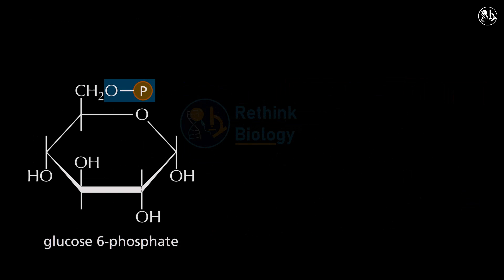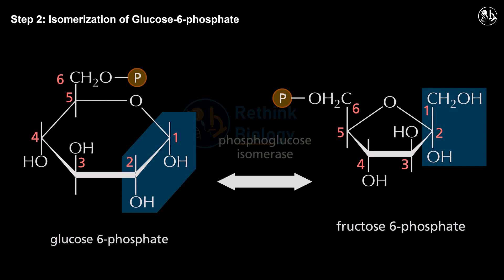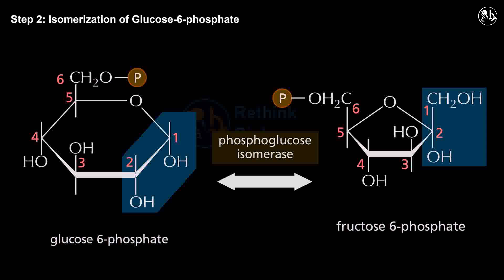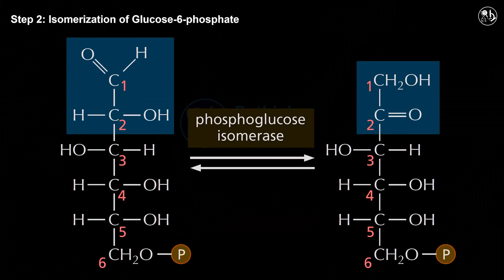Step 2: Isomerization of glucose 6-phosphate. In this step, glucose 6-phosphate is isomerized into fructose 6-phosphate by the enzyme phosphoglucose isomerase. This moves the carbonyl oxygen from carbon 1 to carbon 2, forming a ketose from an aldose sugar.